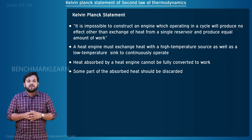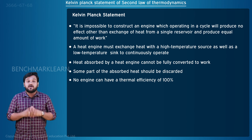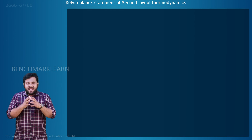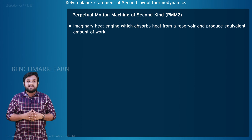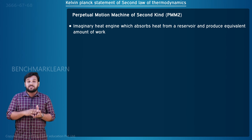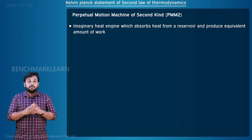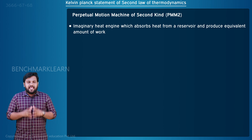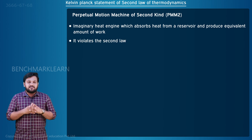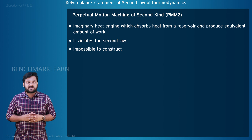This means that no engine can have a thermal efficiency of 100%. An imaginary heat engine which absorbs heat from a reservoir and produces an equivalent amount of work is called a perpetual motion machine of the second kind, or PMM2. A PMM2 violates the second law, and hence it is impossible to construct.